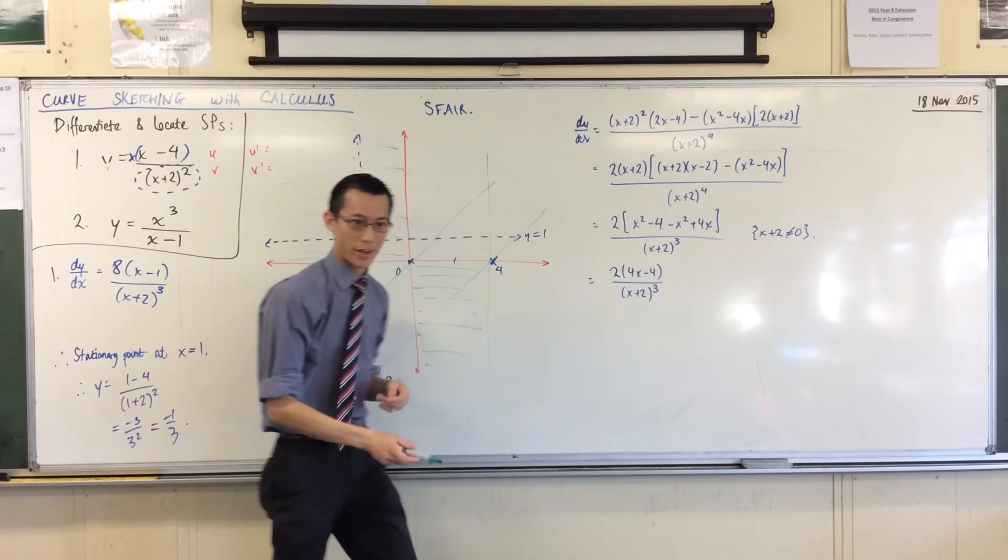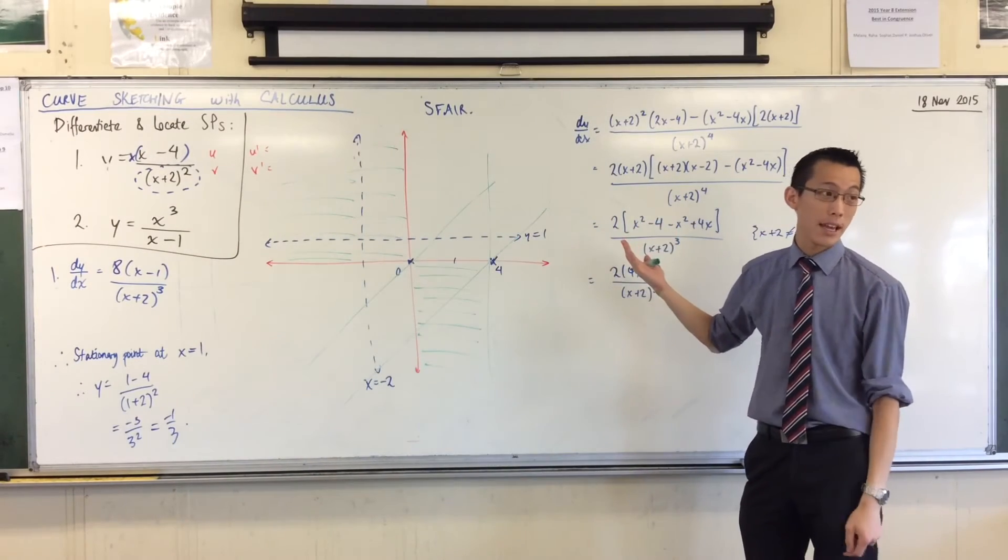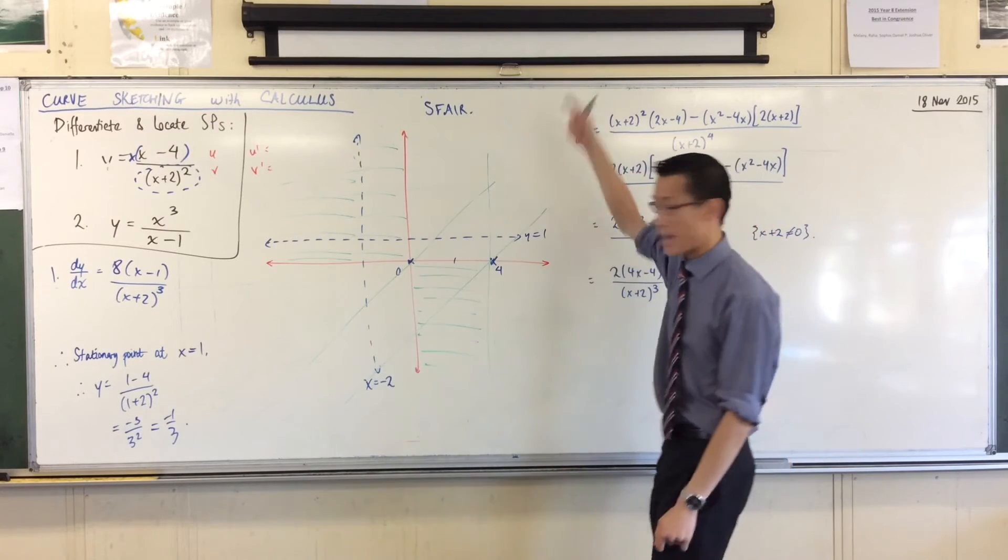Highlighters are really good for this, by the way. I just don't have highlighters that work on this board. And then I transition past 4, and I have two positives, meaning above the axis, not positive.